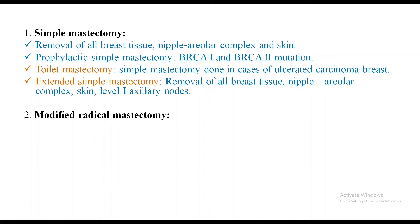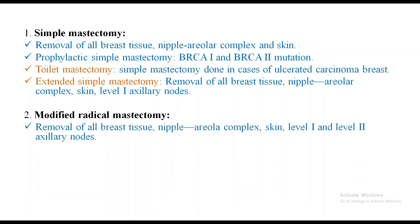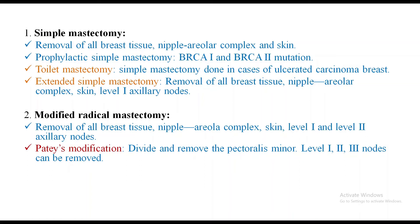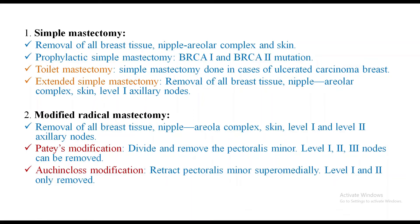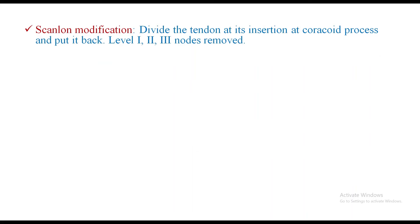Modified radical mastectomy (MRM): removal of all breast tissue, nipple-areola complex, skin, and level 1 and level 2 lymph nodes. In one modification, we divide and remove the pectoralis minor, allowing level 1, 2, and 3 nodes to be removed. The most common modification is the Patey modification, where we retract pectoralis minor superiorly and medially, allowing removal of level 1 and level 2 nodes. In the Scanlon modification, the tendon is divided at its insertion at the coracoid process and then reattached, helping to remove level 1, 2, and 3 lymph nodes.